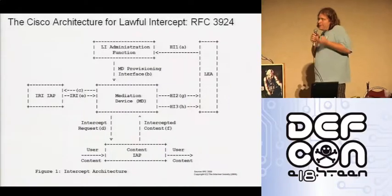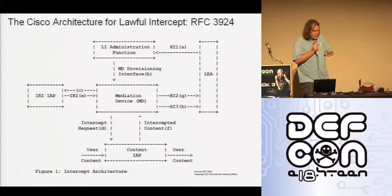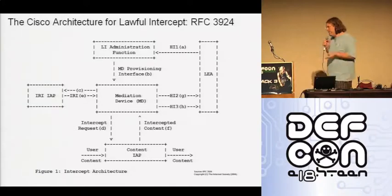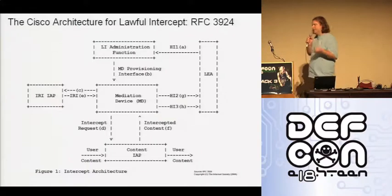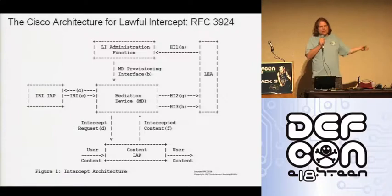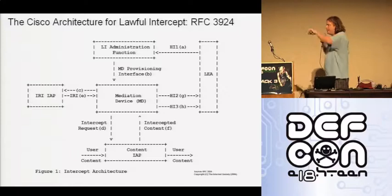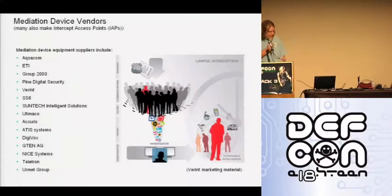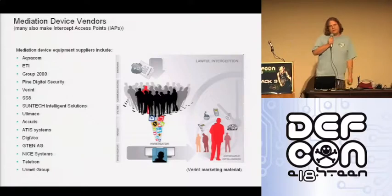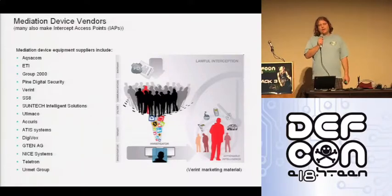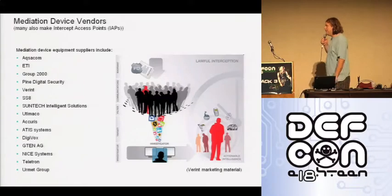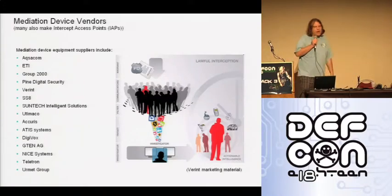The wiretap is provisioned using a mediation device, which is really the heart of the wiretapping system. It sends interception requests to various intercept access points — places where you can collect data. The data is collected and sent back to the mediation device, which packages it and sends it on to the law enforcement agency. There's a partial list of vendors who make mediation devices compatible with the Cisco architecture for lawful intercepts. One company called Verant has particularly nice marketing material.